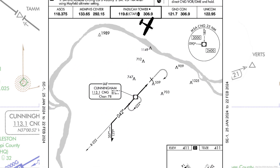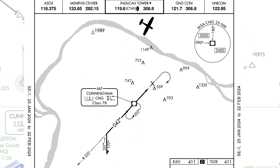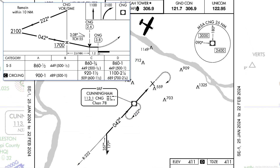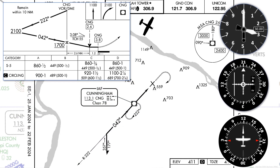We can overlay the approach plate onto our chart, and let's also bring back the profile view with the minimums section. Our instruments show us at 3,000 feet on about a 1-2-0 heading.